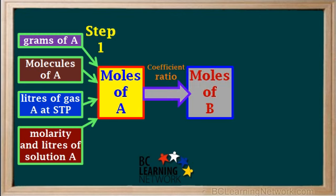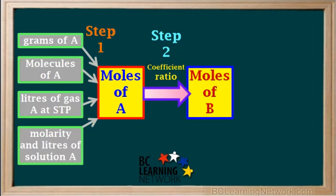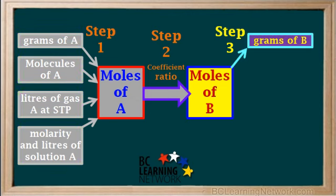Step 1 in any stoichiometry problem is to convert the given quantity of A into moles of A. In step 2, we use the coefficient ratio to convert moles of A into moles of B. And in step 3, we convert the moles of B to the quantity of B we are asked for.